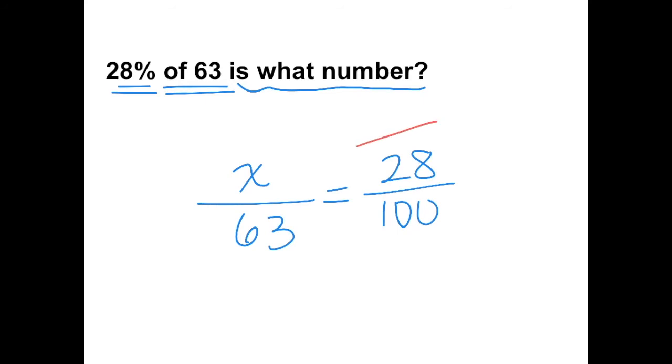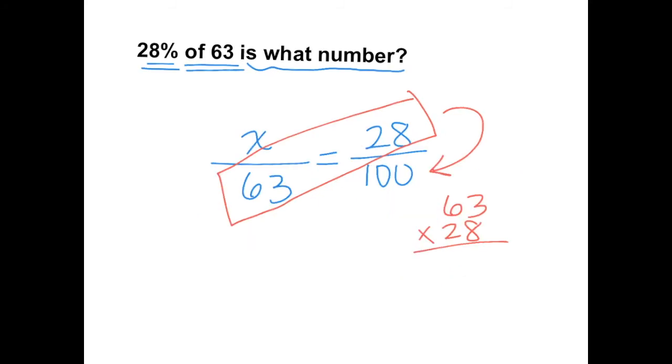Again, we multiply the two numbers that we're given and divide by what's left over. So let's multiply 63 times 28. You get 24, and then we get 50. Add a 0. 3 times 2 is 6. 6 times 2 is 12, add 4—16. 7 and 1. So this equals 1,764.